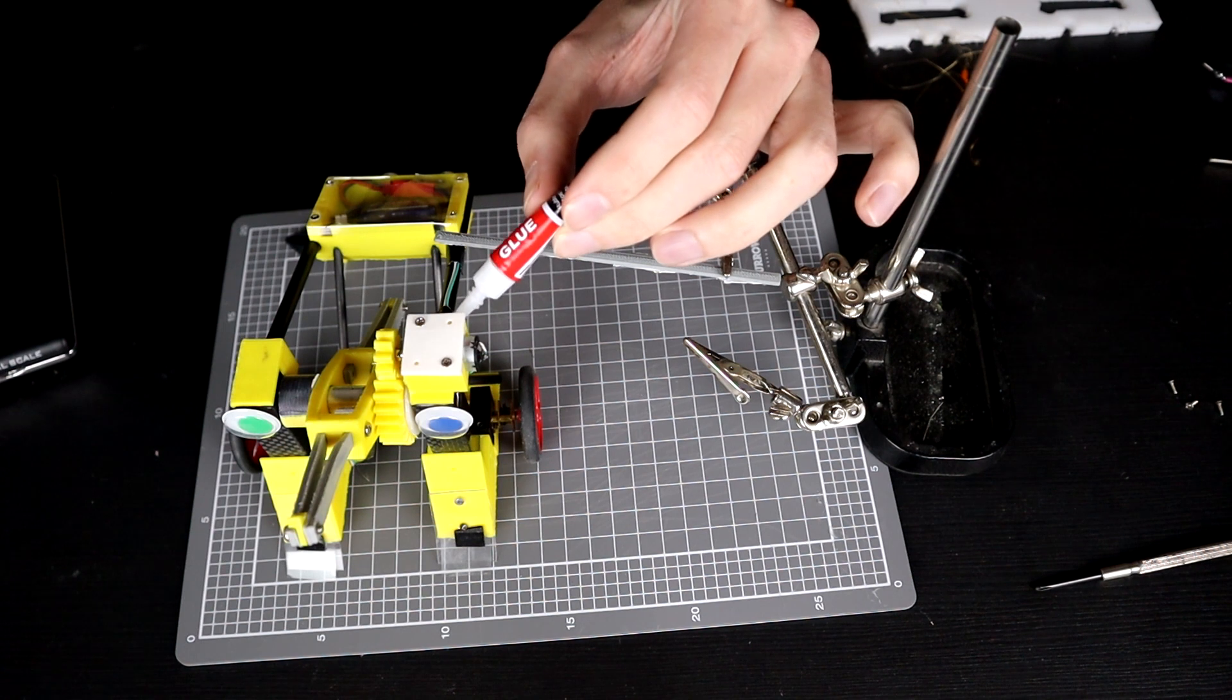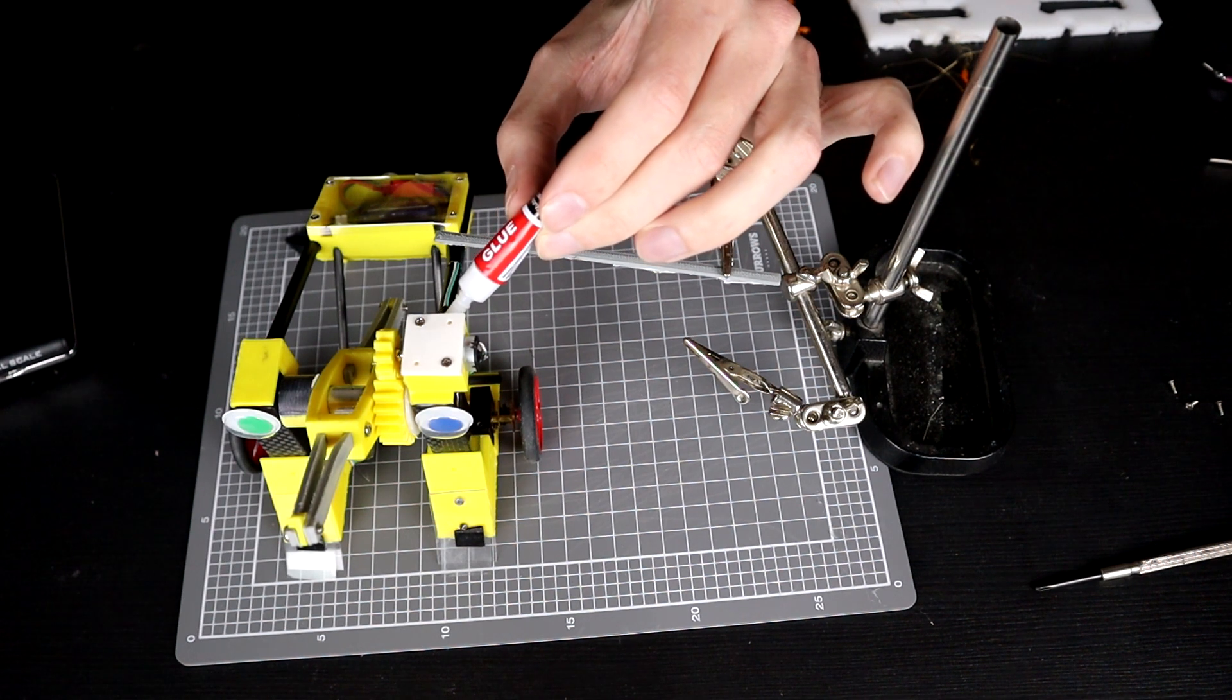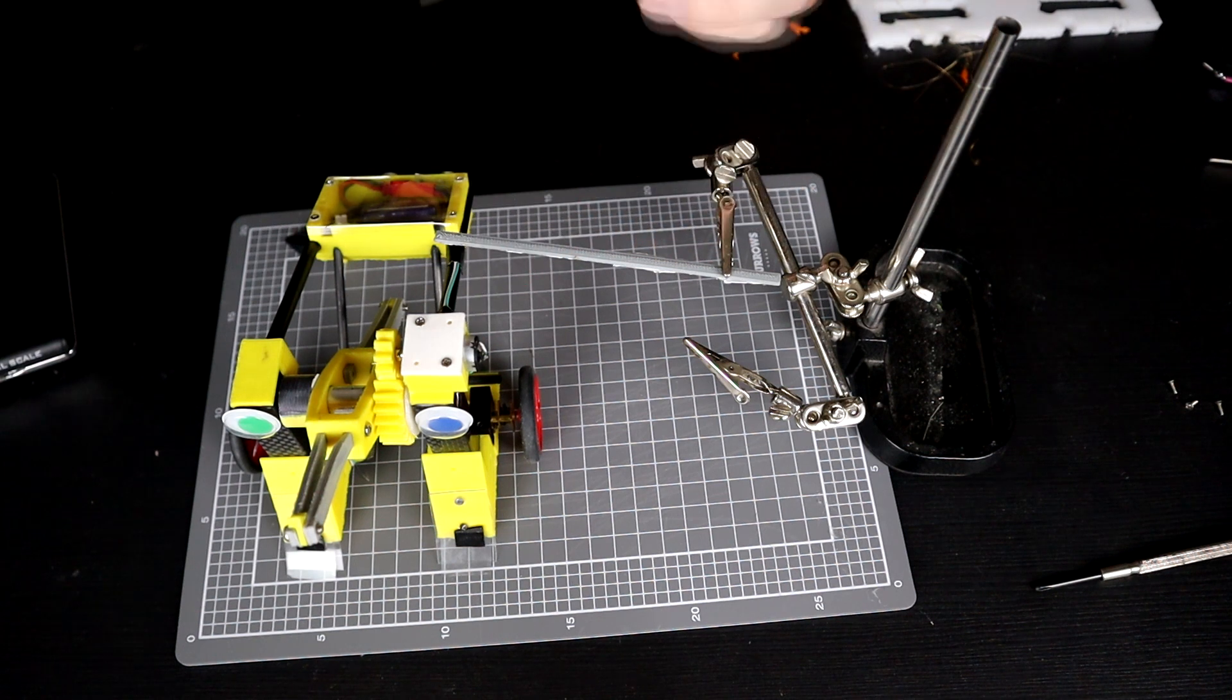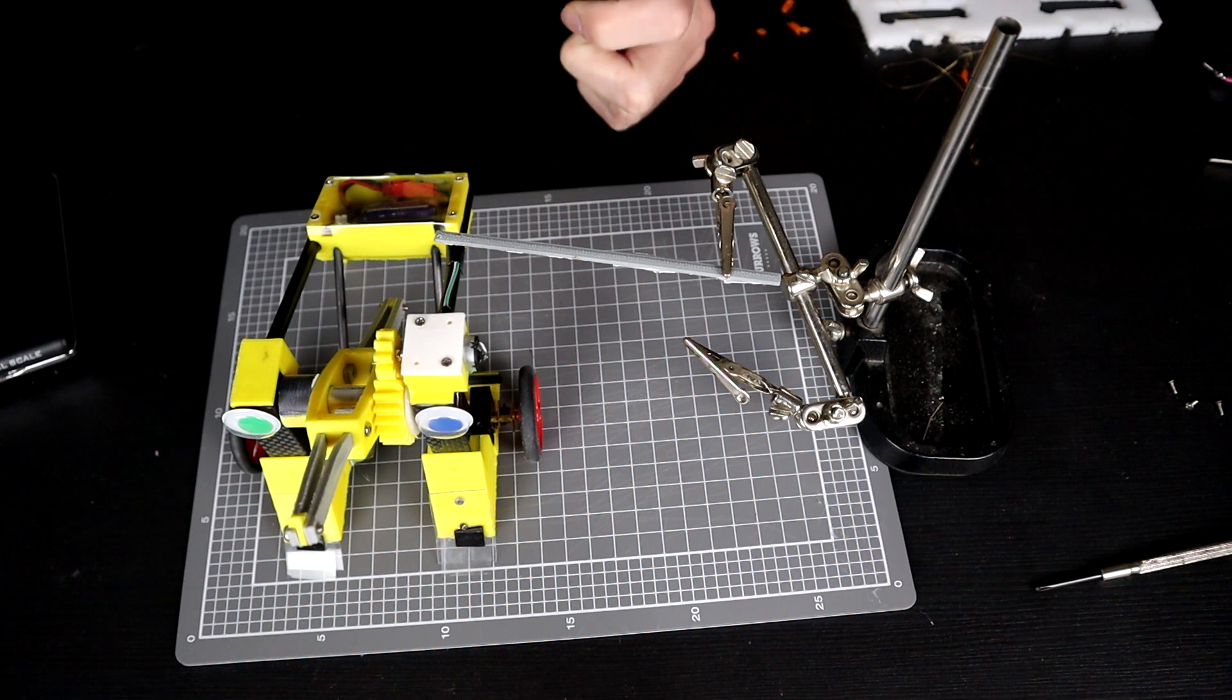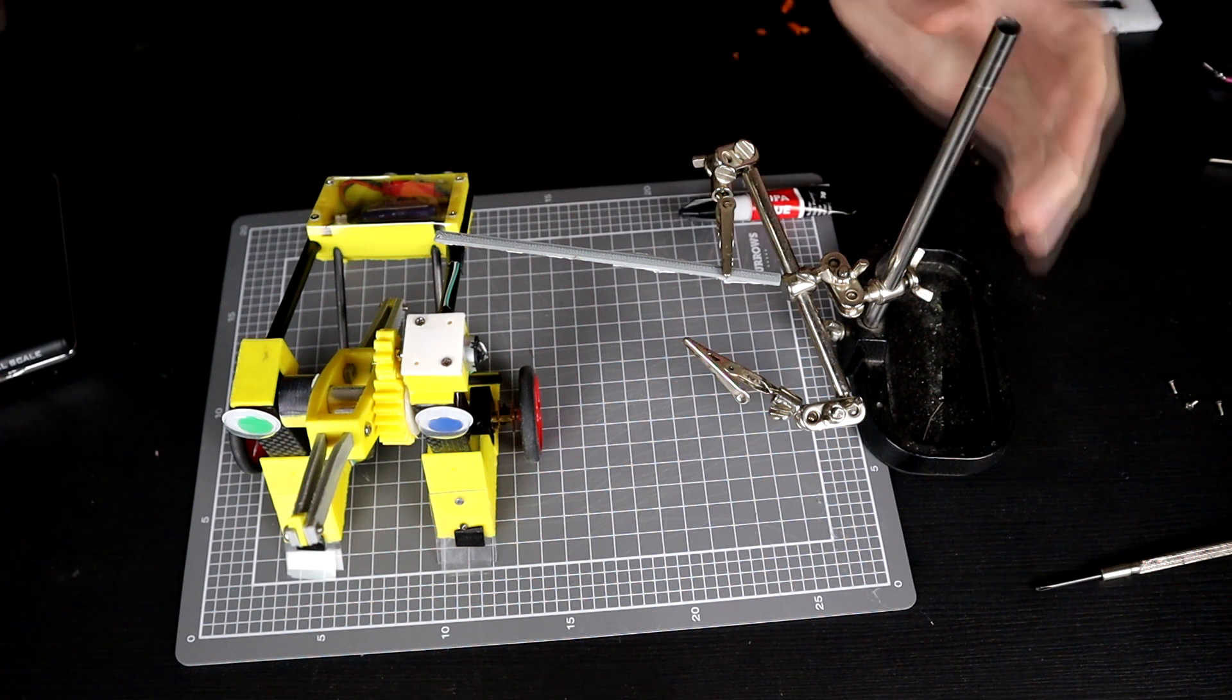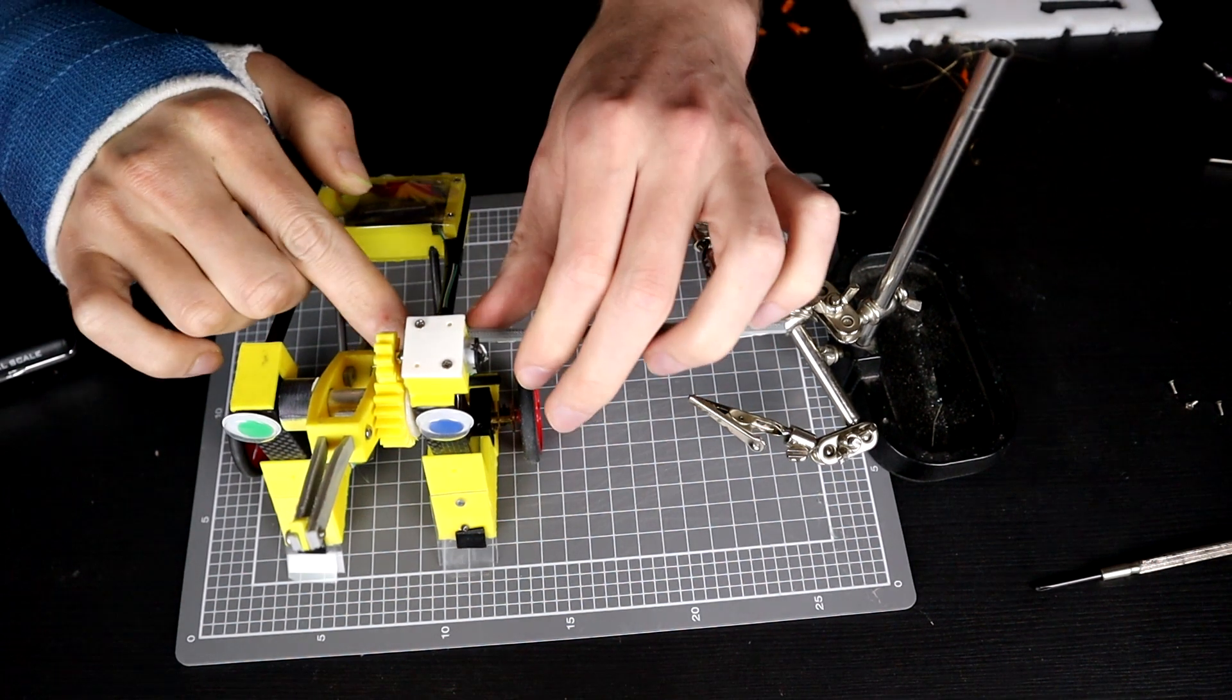Now, I will say this is ABS. ABS doesn't particularly like super glue. Normally, the best thing to do with ABS is to acetone weld, but I'm running out of time. And so super glue is going to have to do the job for us here.